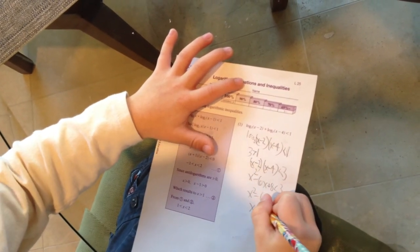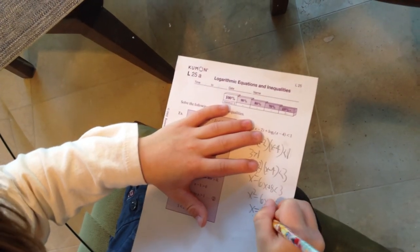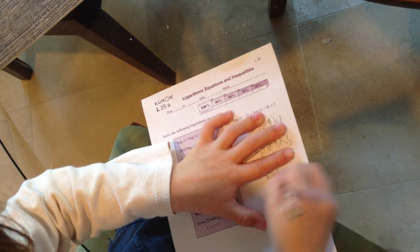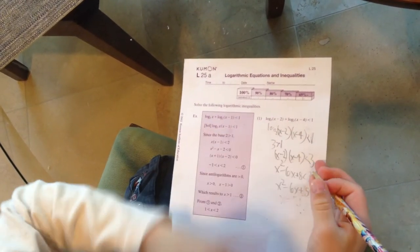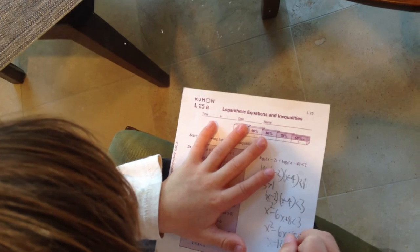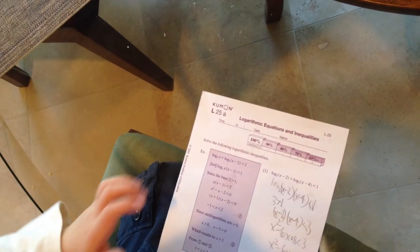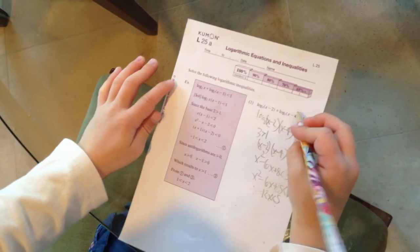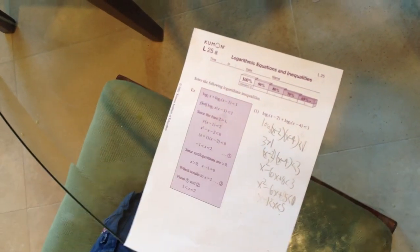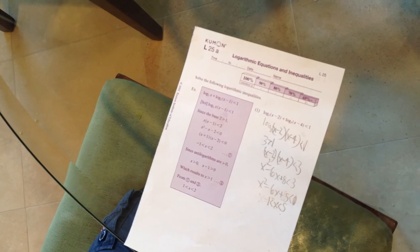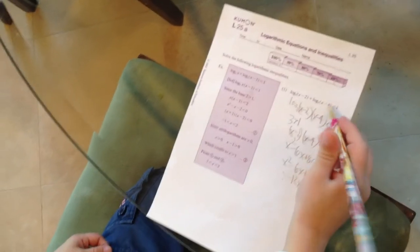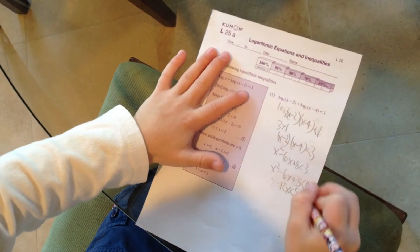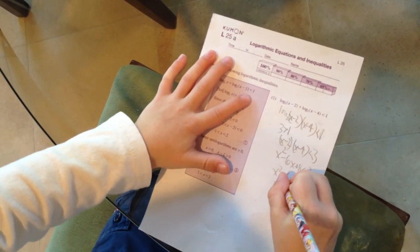x equals 5 comma 1. So now, if x equals 5 comma 1, if you wanted in interval form, 1 is less than x, which is less than 5. Now, if the antilogarithms are greater than 0, (x minus 2) times (x minus 4), x is greater than 2, x is greater than 4. So the more important one is x is greater than 4. So 4 is less than x, which is less than 5. And that is the right answer.